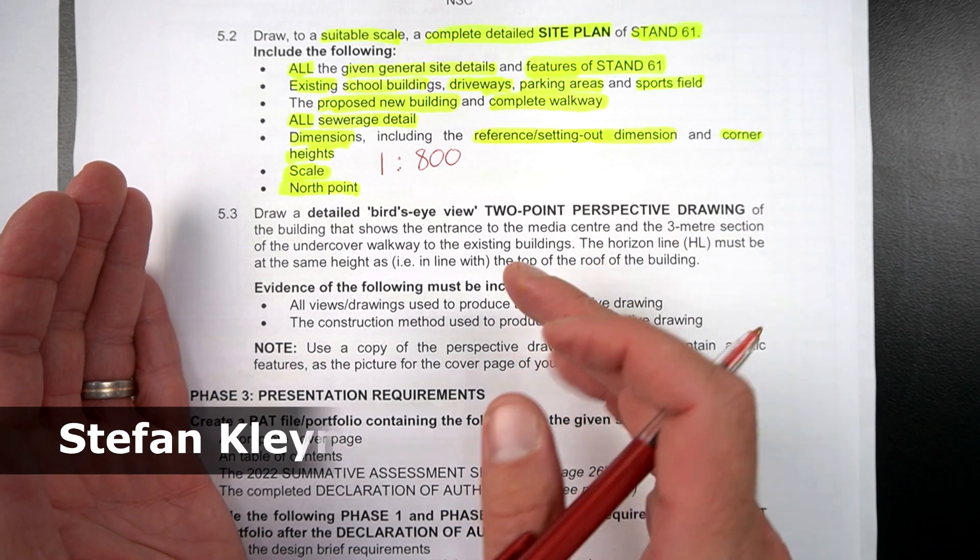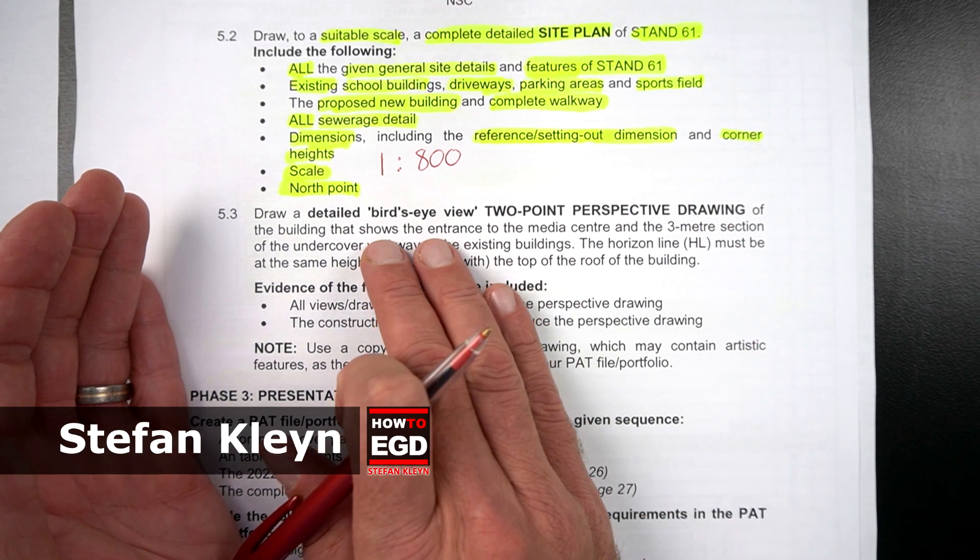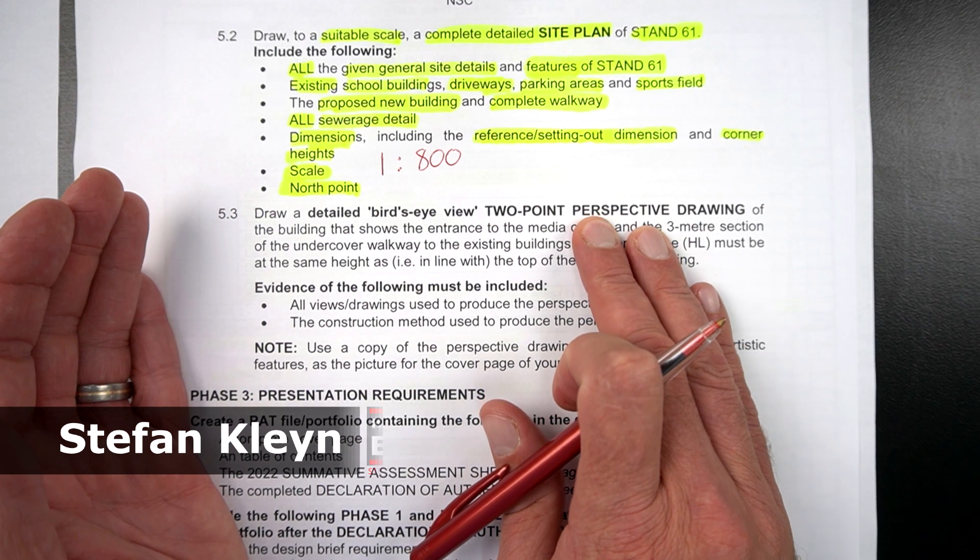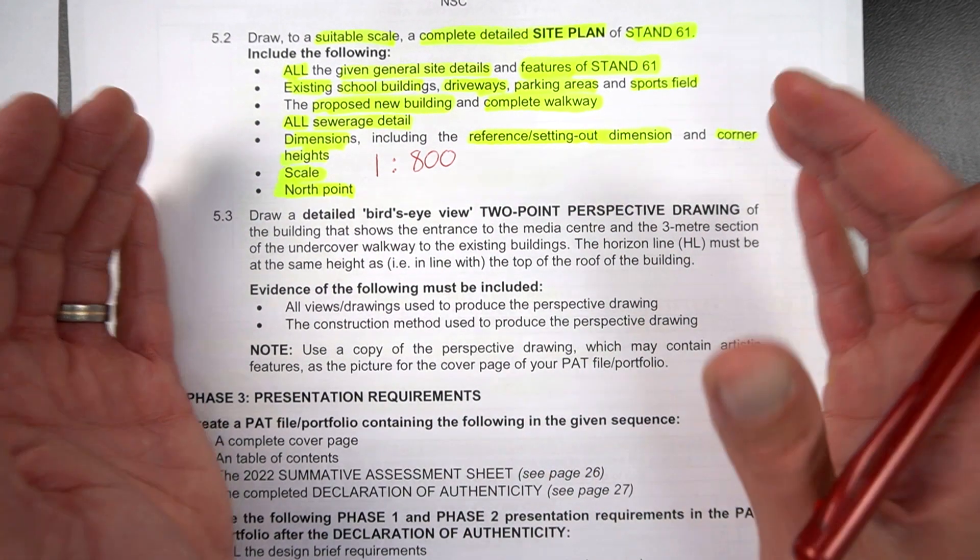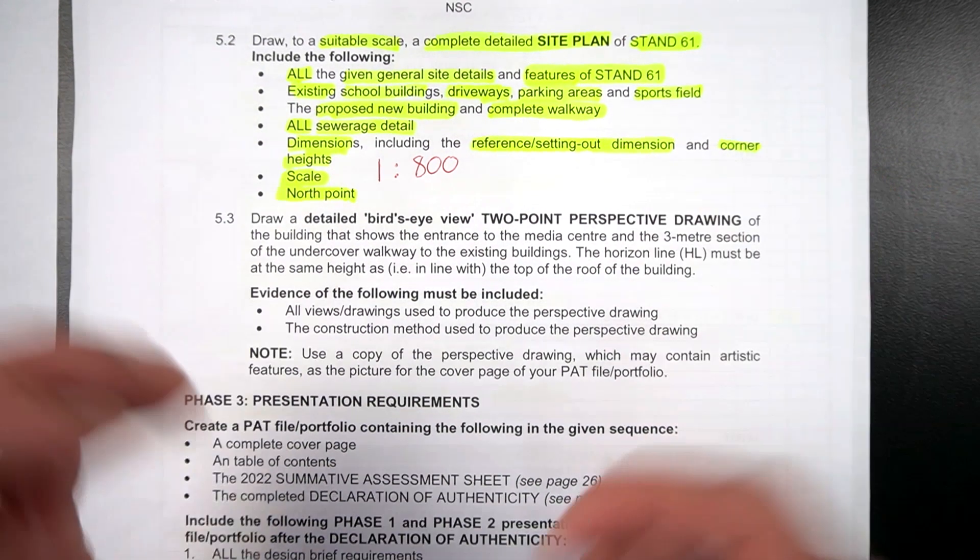Right, it's How to Hack Your PAT on How to EGD, and we are zooming in on the two-point perspective and the requirements with an example at the end of how you're going to nail this drawing.